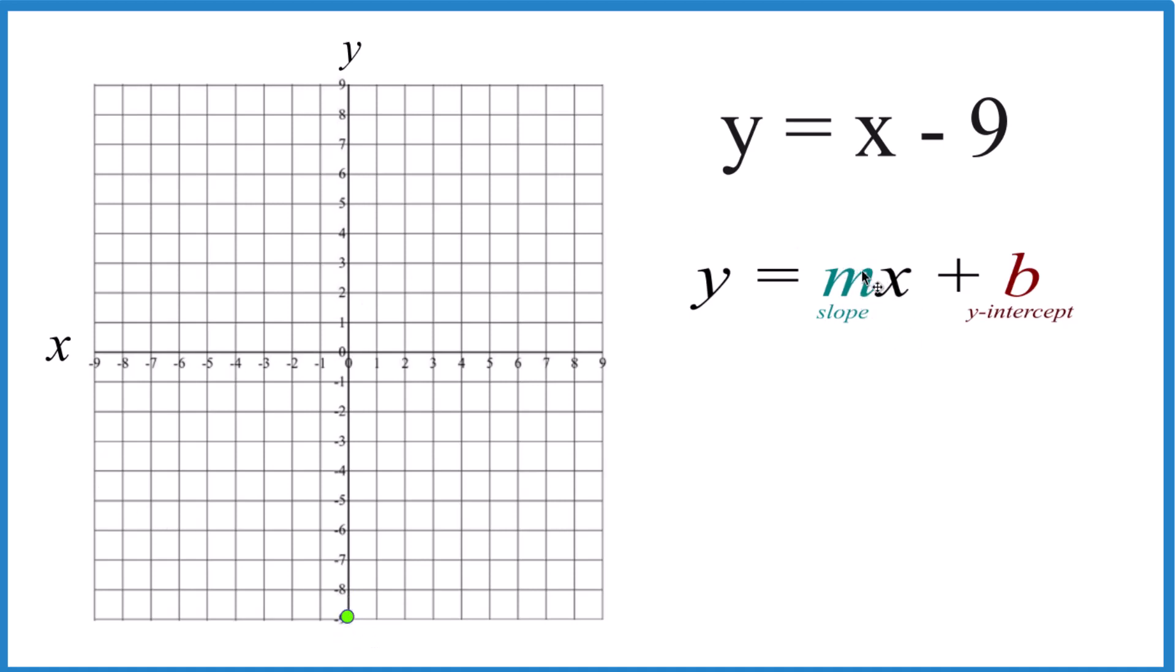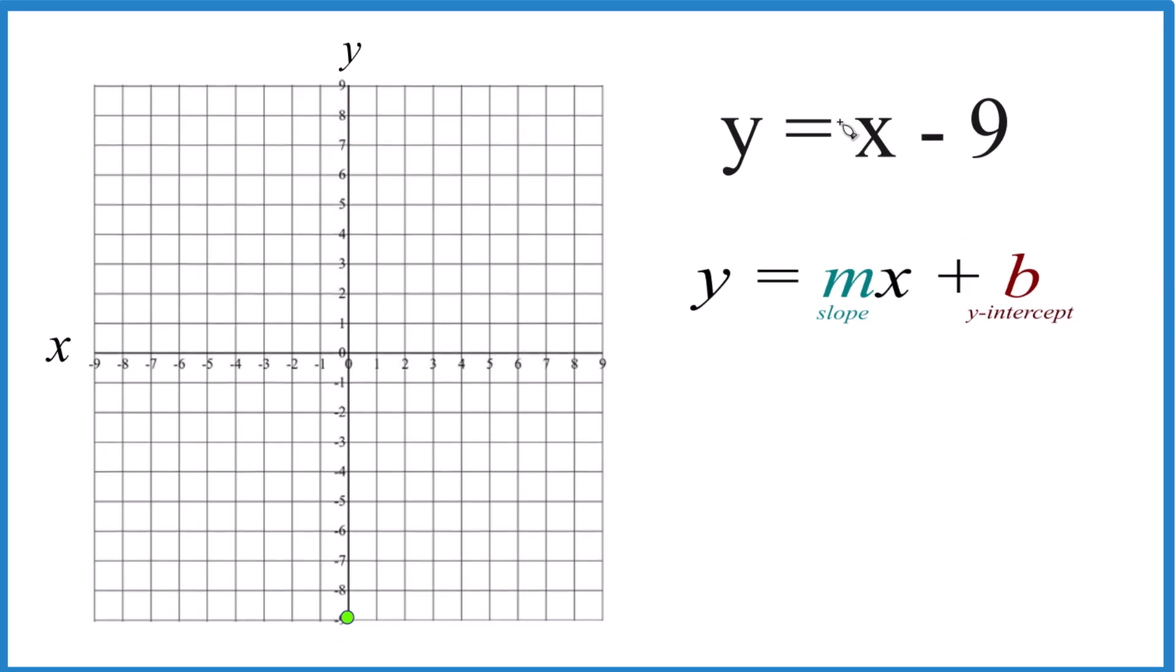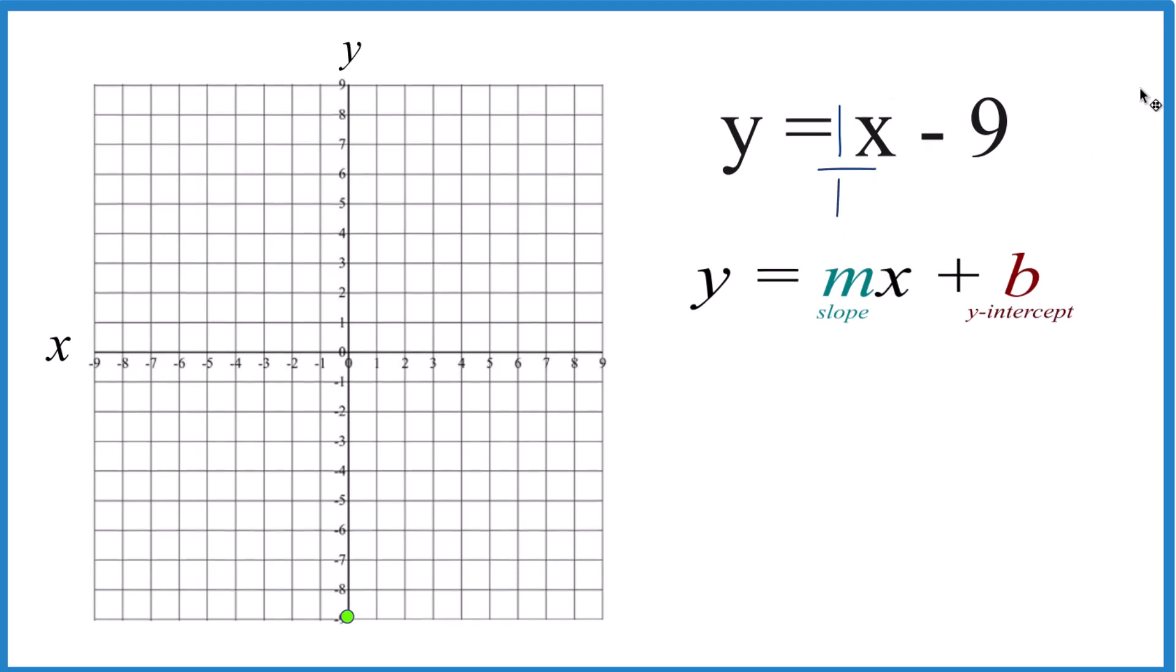Then for the slope, m. When we look at the x here, this is actually, we can consider there a 1, 1x, it's the same as x. And then we can call it 1 over 1, which is still 1. We haven't changed anything, but now we can call it rise over run.